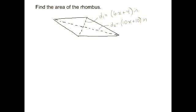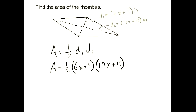So here we have a rhombus with a diagonal of 6x plus 4 and another diagonal of 10x plus 10. We're going to use our area formula for a rhombus. Area is 1 half diagonal one times diagonal two. And now we're going to plug in what we know. So diagonal one is 6x plus 4. Diagonal two is 10x plus 10.